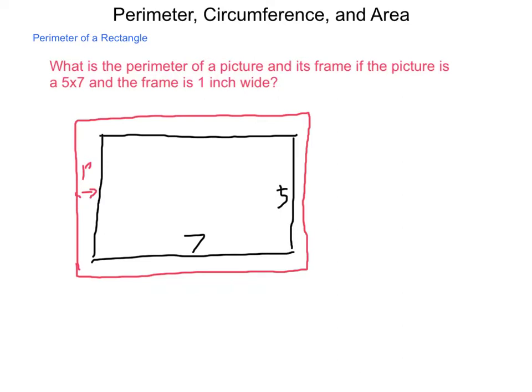So perimeter, by definition, is the distance around the outside of an object. So what would be the total perimeter of this combined shape? Well, in order to know that, we need to know what the total dimensions are.